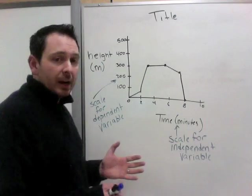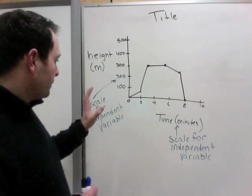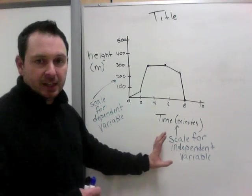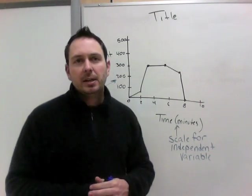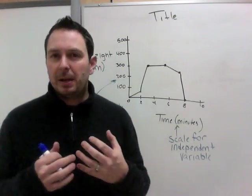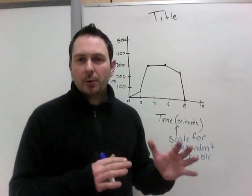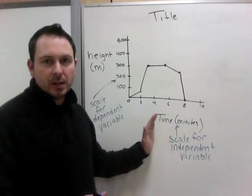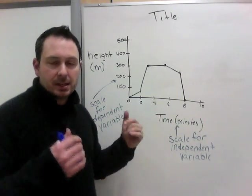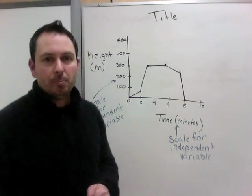So the way graph works though is there will always be a dependent variable and an independent variable. If something's independent, it doesn't need anything else. If you are grown up and you're an independent person, you're out on your own, you're not relying on your parents anymore, you're independent. So time doesn't rely on anything. Time is time. It's going to happen no matter what.